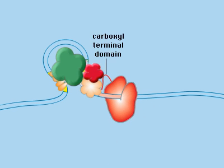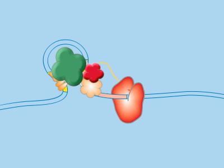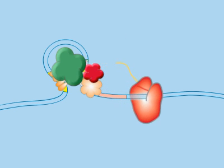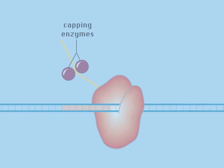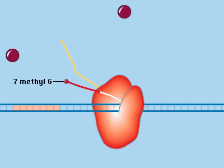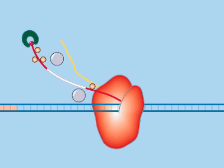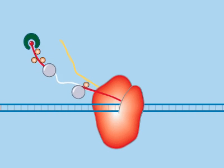When transcription begins, the carboxyl terminal domain of RNA polymerase II becomes heavily phosphorylated. The 5' end of the growing RNA is protected from 5' exonucleases by a cap of 7-methyl G. A cap binding complex and different kinds of HNRNPs bind to the RNA.